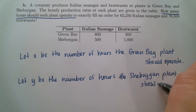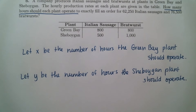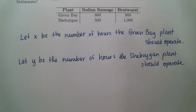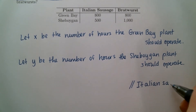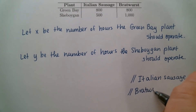Those are our variables. Now we need to set up our system of two equations. Since we have two variables, we're going to need two equations. What else is in the problem? The variables took care of Green Bay and Sheboygan. The other two ideas are Italian sausage and bratwurst — that's where the equations are going to come from.